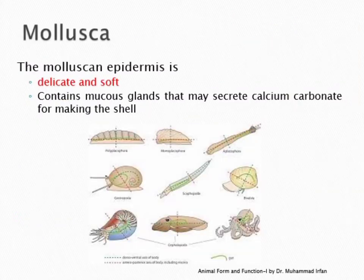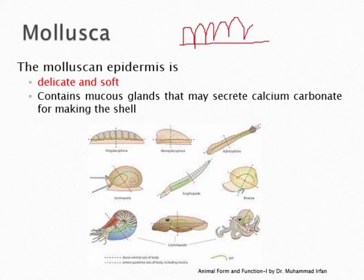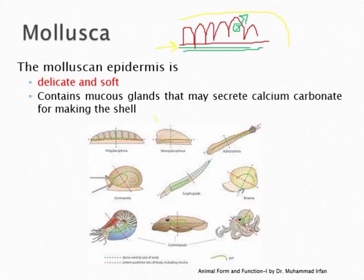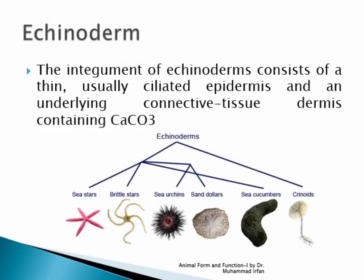In molluscs, the same configuration applies: epidermis, basement membrane, and connective tissue. The epidermis is delicate and soft, and epidermal cells may have modified glandular cells that secrete calcium carbonate to make shells on molluscan animals. Echinoderms also have an integument of thin ciliated epidermis — the epidermis has cilia — and an underlying connective tissue layer called dermis after the basement membrane. This dermis contains calcium carbonate, providing a skeleton-type structure.